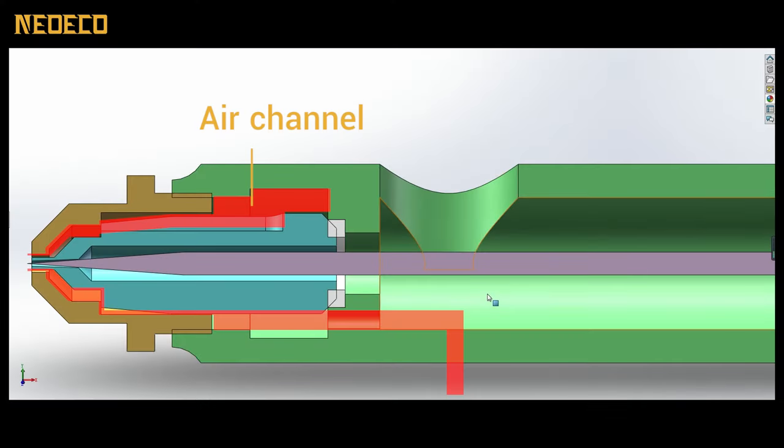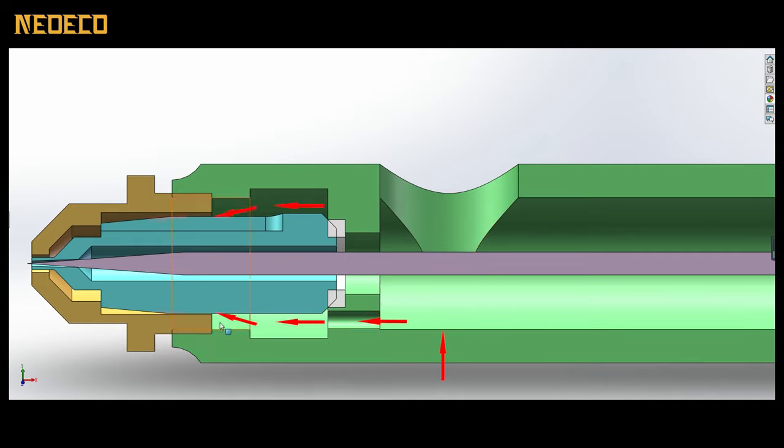At the core of the airbrush lies the air channel, serving as the conduit for compressed air sourced from the compressor. This air then flows through the channel, where it mixes with the paint. Concurrently, paint from the cup travels through an internal channel, reaching the front of the airbrush nozzle tip for thorough mixing.